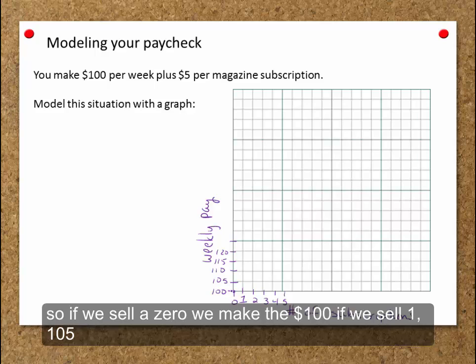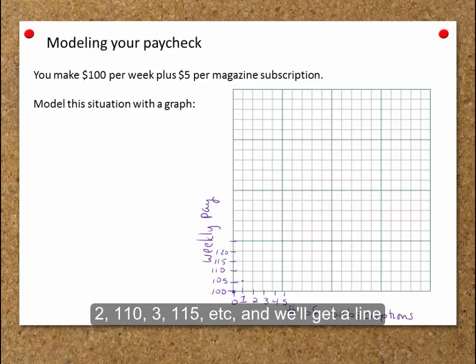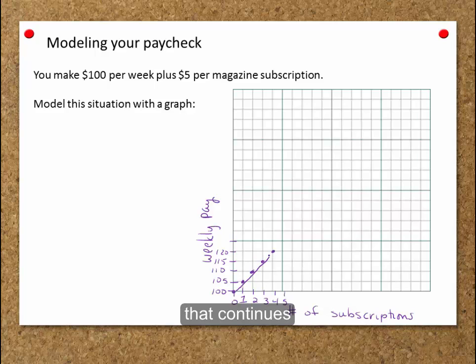So if we sell zero, we make $100. If we sell one, $105, two, $110, three, $115, four, $120, etc. And we'll get a line that continues in this fashion.